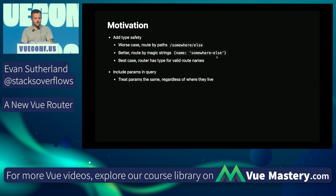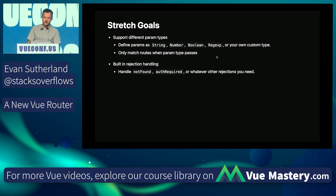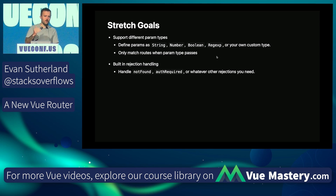The other thing we wanted to accomplish is to support query params — treating params the same whether they're in the path or in the query. In addition to those fundamental goals, we thought it would be really cool to support types for params that are not just strings. So you can define your params as a number, a boolean, a regex, or literally whatever other type you want. We give you types to define your own param types, and it will actually use that when matching a route.